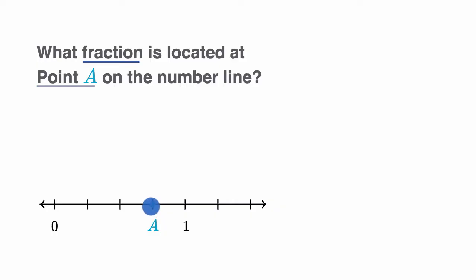All right, now there's a bunch of ways that you could think about it. You could see that the space between zero and one is split into one, two, three, four equal spaces. And this has gone three of those four equal spaces from zero to one.